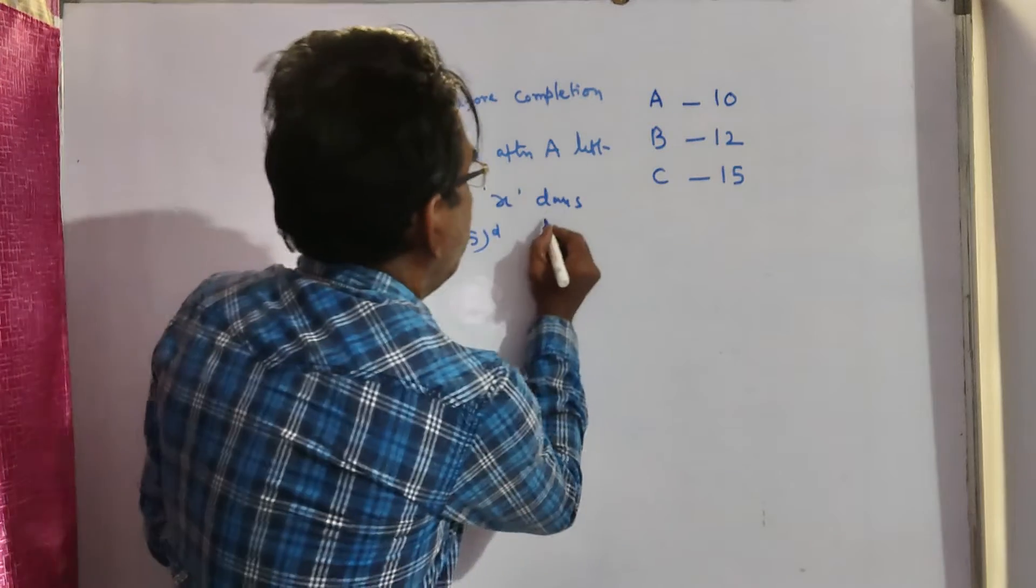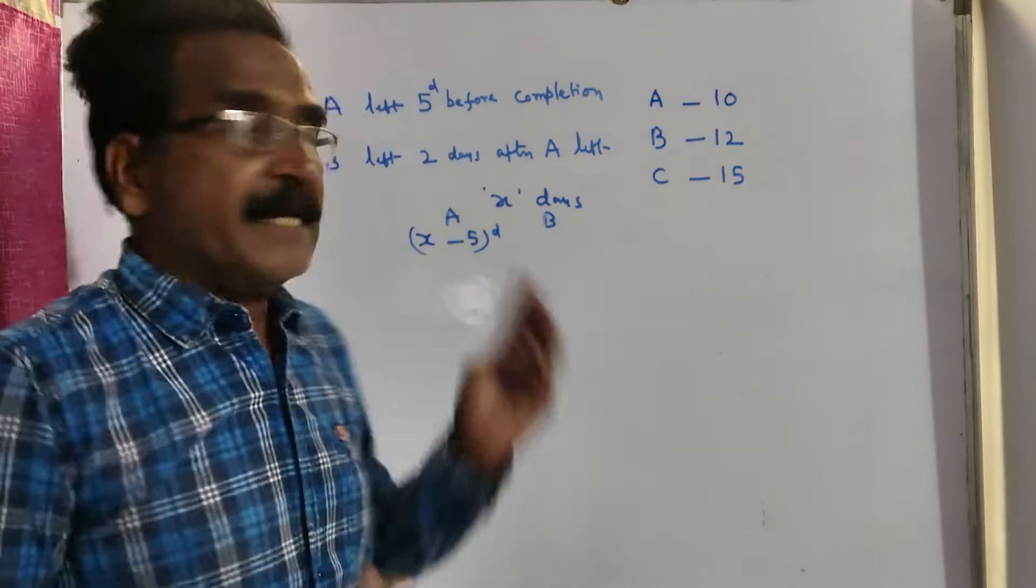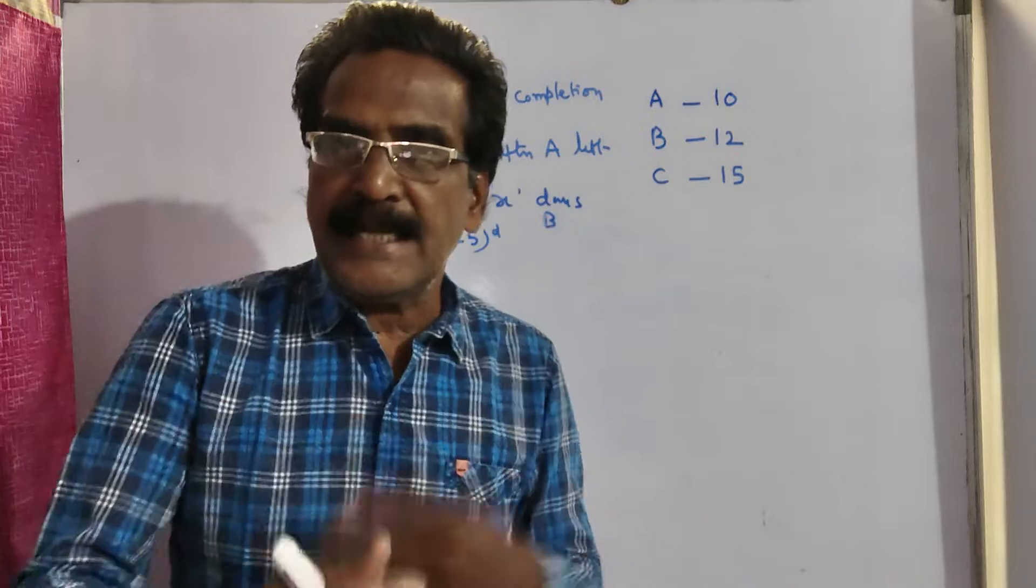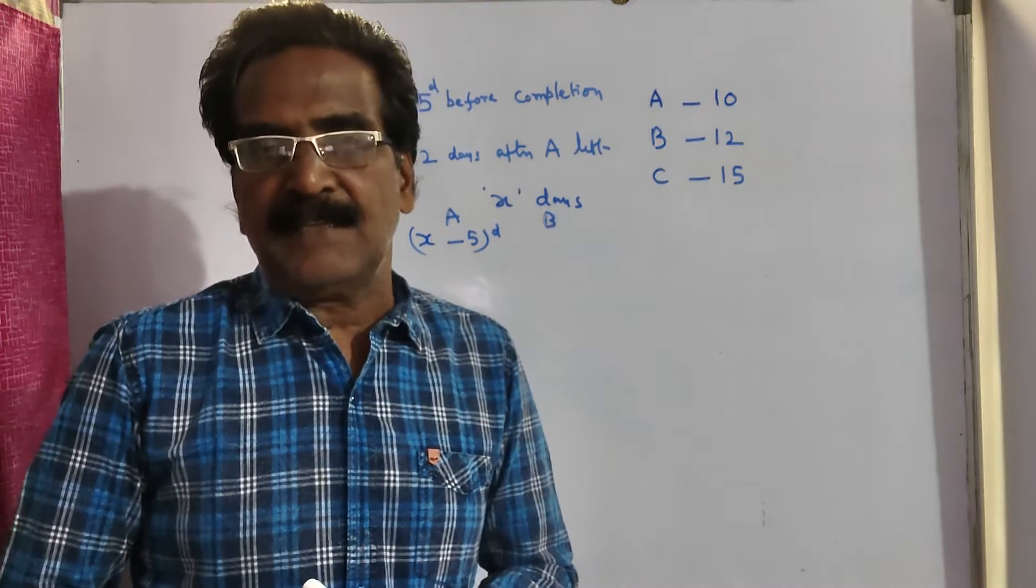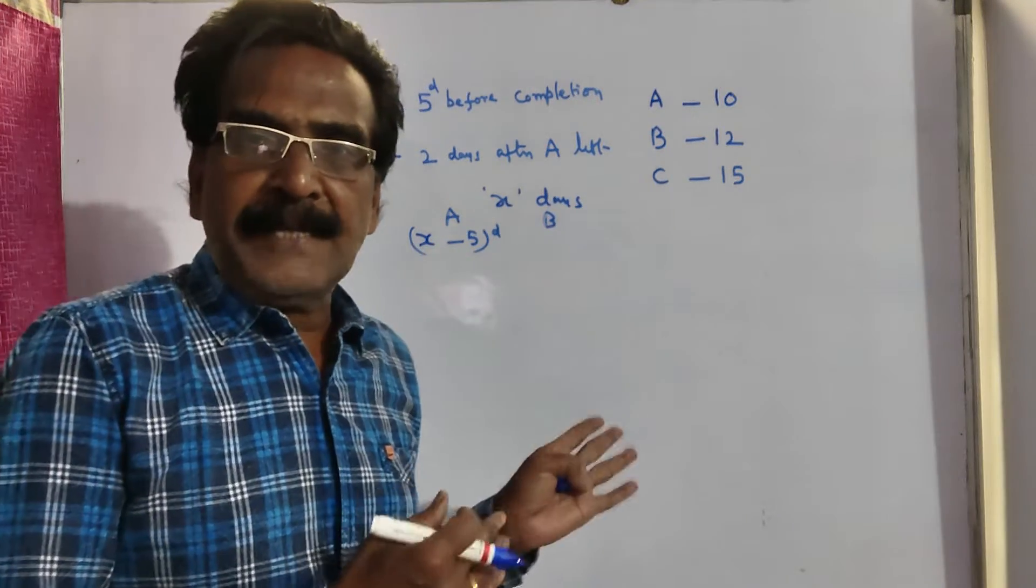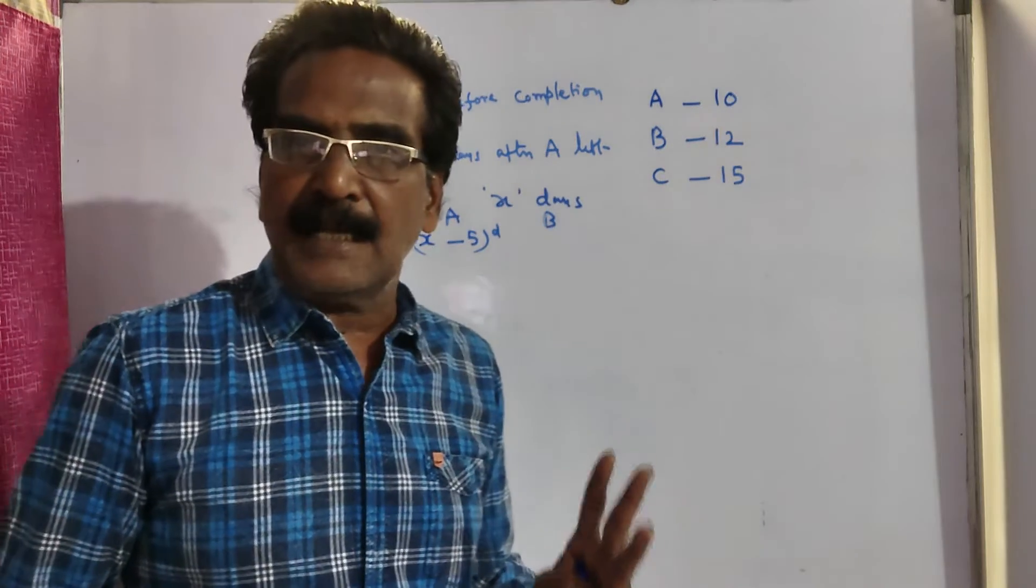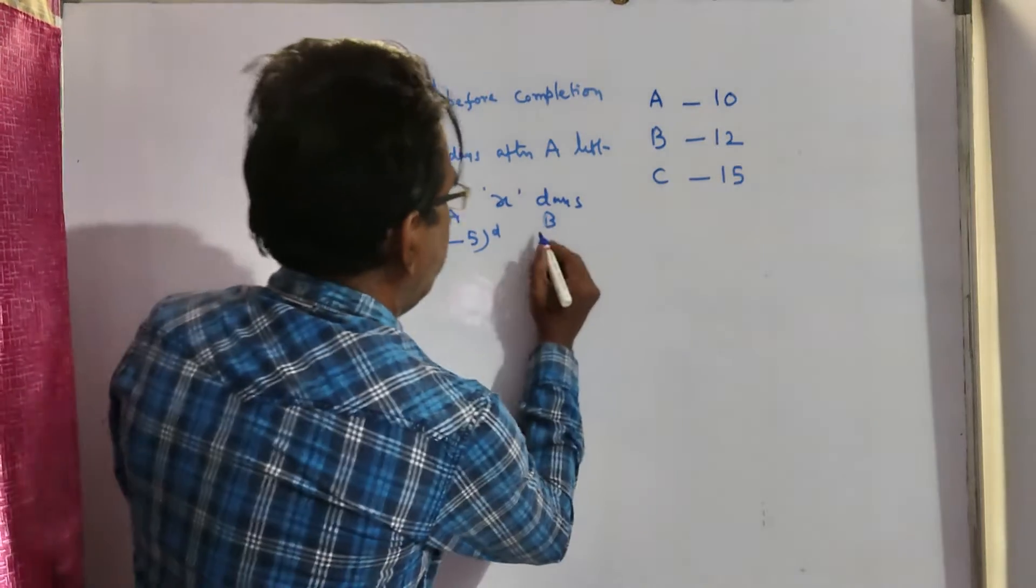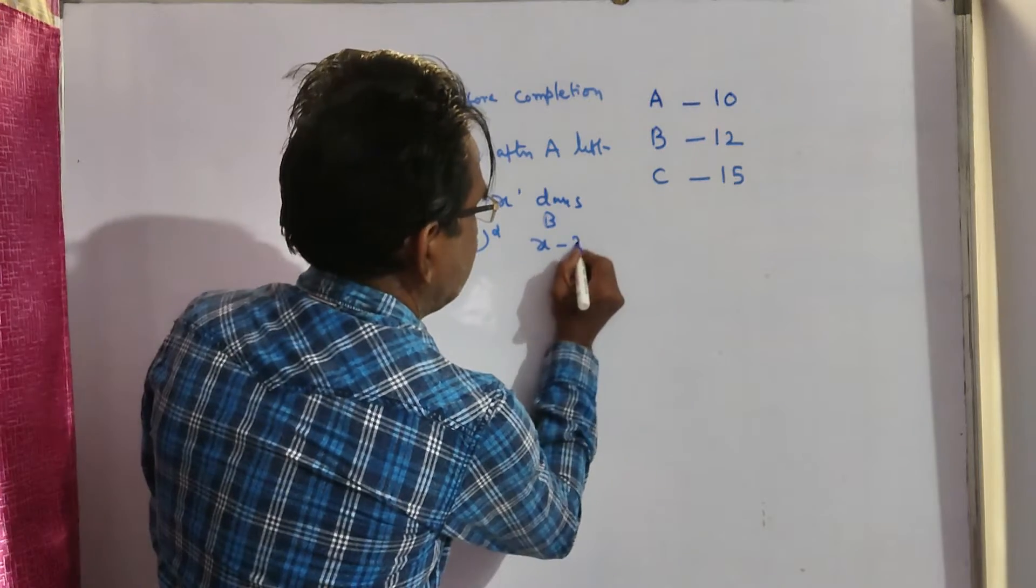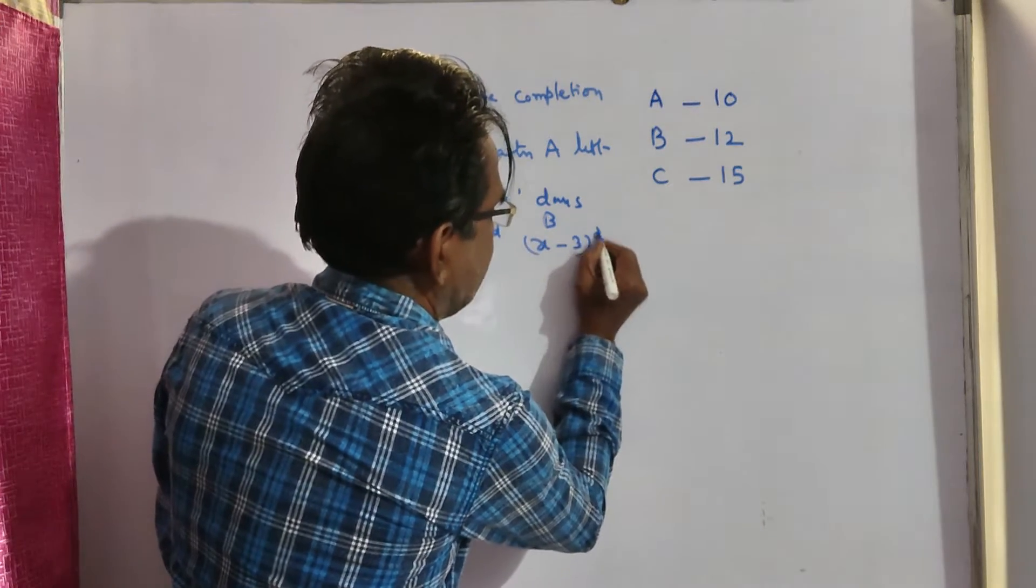B left 2 days after A left. So, it means B left the work just 3 days before the completion of the work. So, B worked for X minus 3 days.